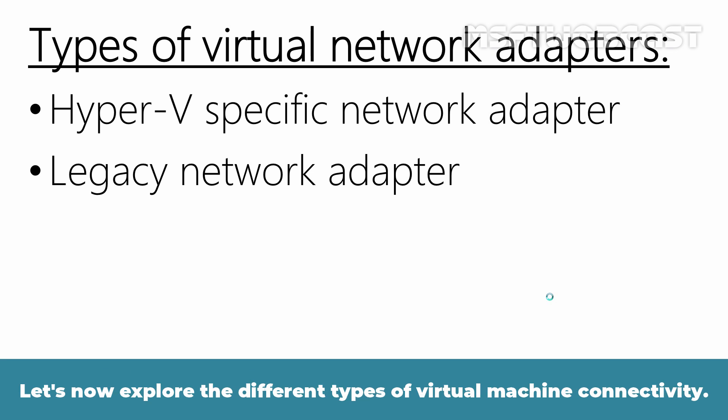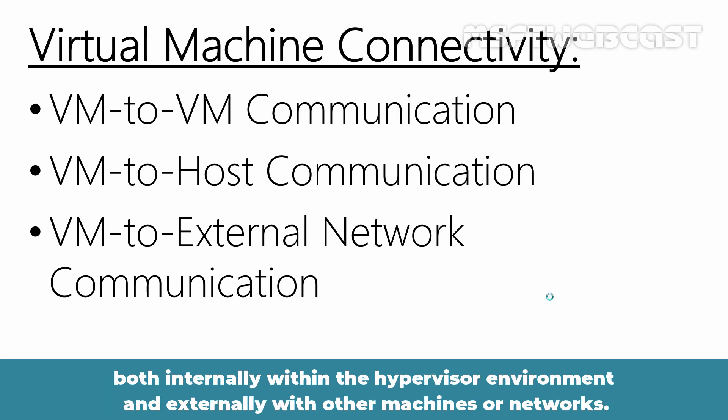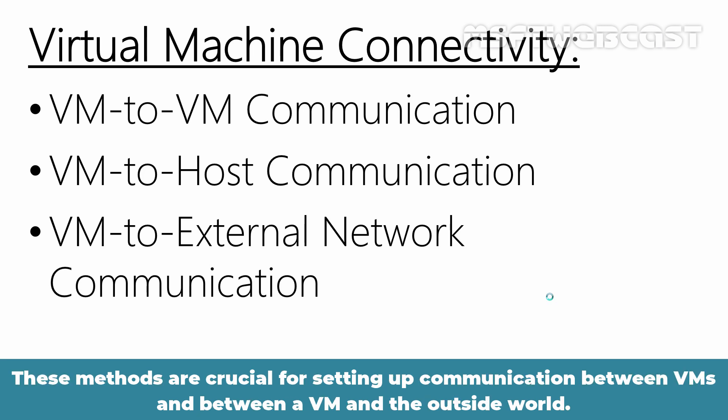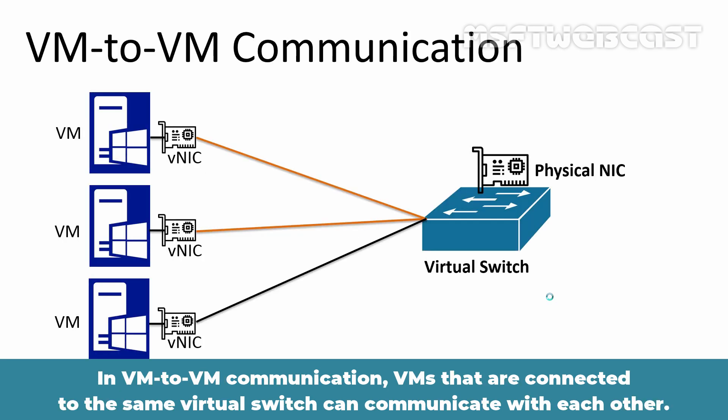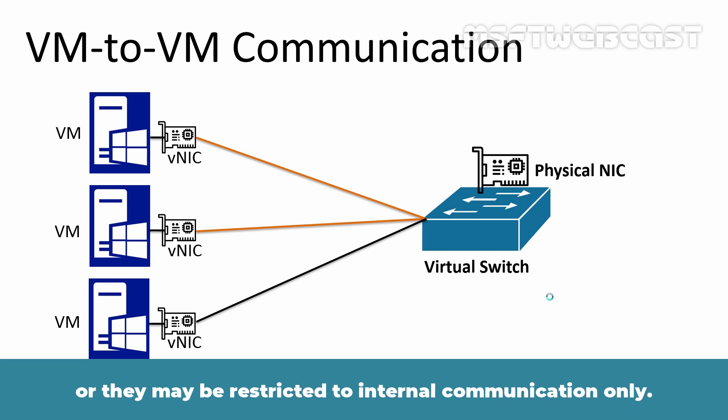Let's now explore the different types of virtual machine connectivity. There are typically different types or methods of how a VM can interact with the network, both internally within the hypervisor environment and externally with other machines or networks. In VM-to-VM communication, VMs that are connected to the same virtual switch can communicate with each other. Depending on the type of virtual switch, VMs may have the ability to communicate outside of their isolated environment, or they may be restricted to internal communication only.